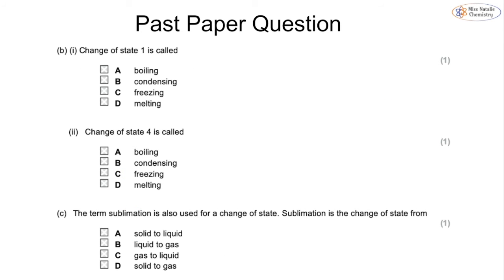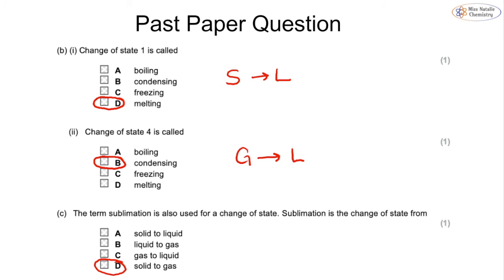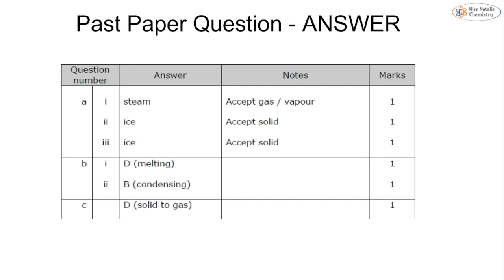For the multiple choice: change in state one — going from a solid to a liquid, ice to water — is called melting, so the answer is D. Change in state four — going from a gas to a liquid — is called condensation, so the answer is B. Sublimation is the change in state from a solid, skipping the liquid, going straight to a gas — the answer is D. One mark for each of those.